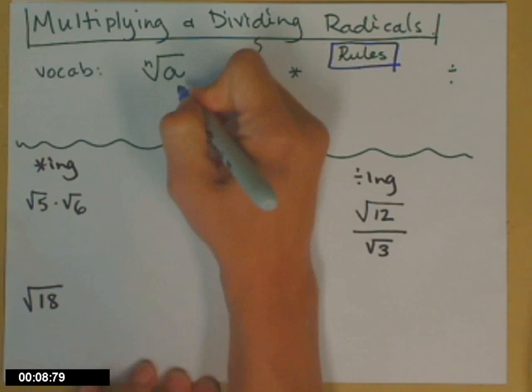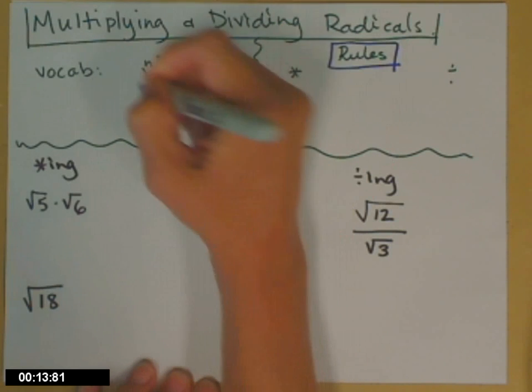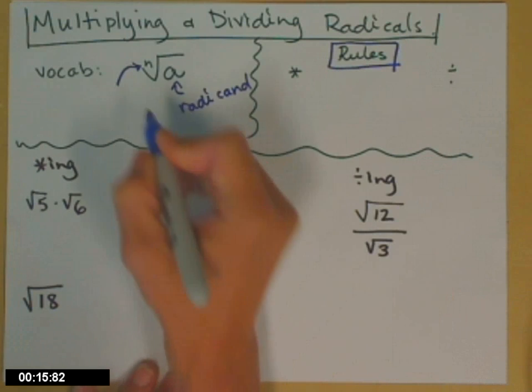So if I have an nth root of a, a is called the radicand. And n is called the index.